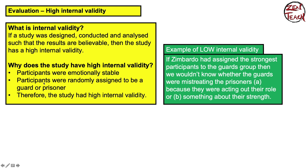Participants were also randomly assigned to the guard and prisoner roles, meaning you didn't pick people who looked more muscular and put them in the guard group. It was done randomly — this is quite a powerful idea, because the behavior you saw from the guards was not because of how you selected people into those groups, but because of randomness. If you had reversed the roles, you would have expected the same outcome, which solidifies the understanding that the behavior observed was due to the social roles.